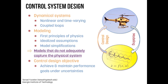As a control engineer, the first thing we do is to model such systems. While doing the modeling, we resort to first principles of physics, idealized assumptions, and model simplifications. At the end of the day, the models that we have do not adequately capture the physical system. From a control design point of view, we need to design a controller to achieve and maintain performance goals under such system uncertainties.